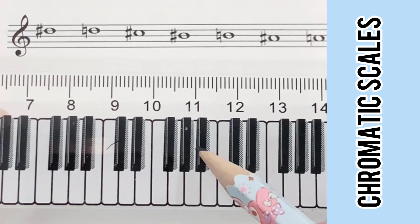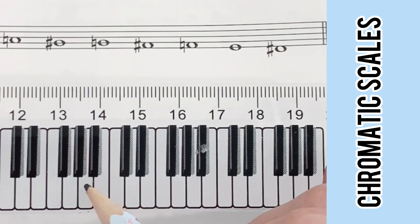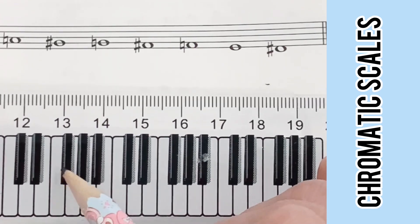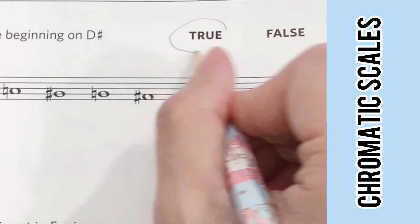Next version: D sharp, D natural, C sharp, B natural, A sharp, A, G sharp, G, F sharp, F natural, E, D sharp. So it's correct.